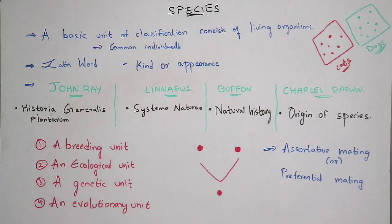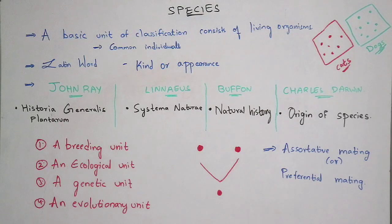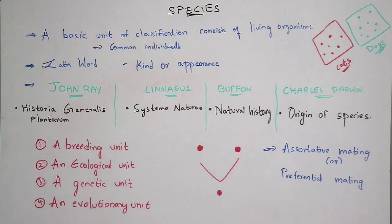The best examples to explain species — common examples are cats, dogs, and buffaloes. Scientific examples are Apis indica, Apis dorsata, Apis mellifera, and Apis florea — these are the common scientific examples used to explain species.